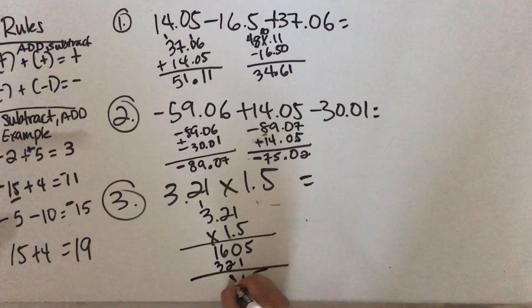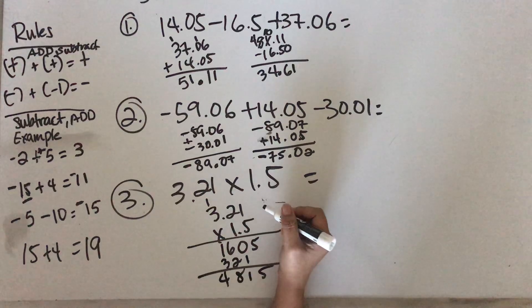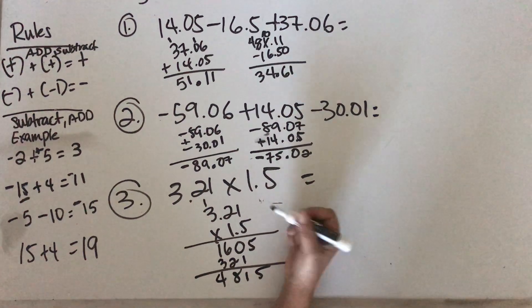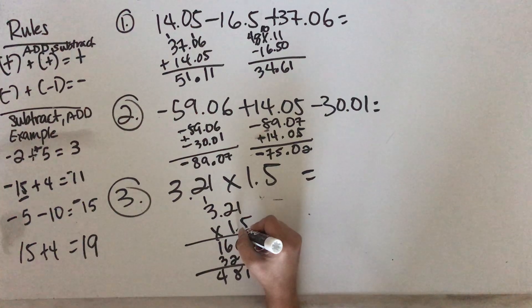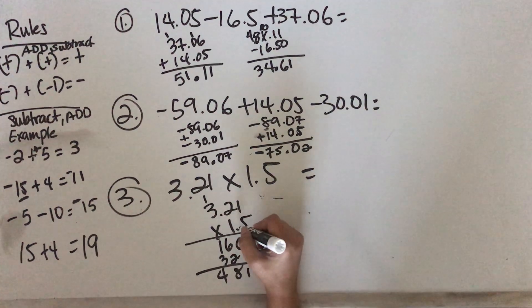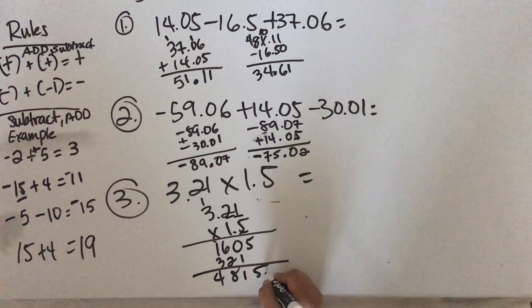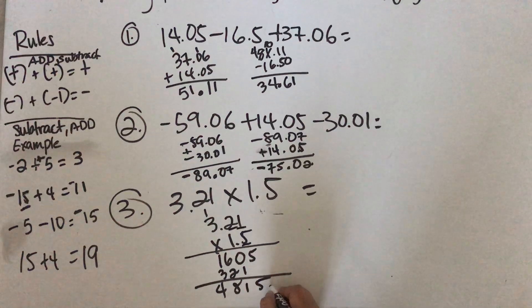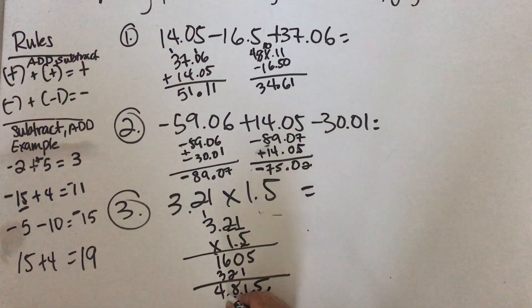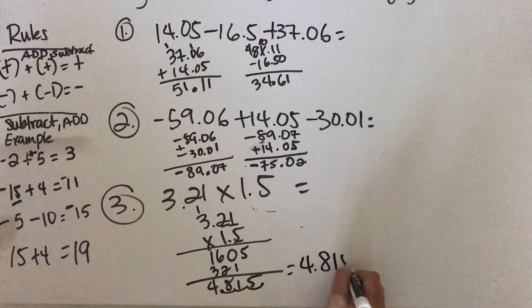Add them together and you get 4815. Now to determine where the decimal point ends up, figure out how many decimal places are to the right of the decimal. Here there are 1, 2, 3. Start on the right side and count left 3 spaces: 1, 2, 3. So your answer is 4.815.